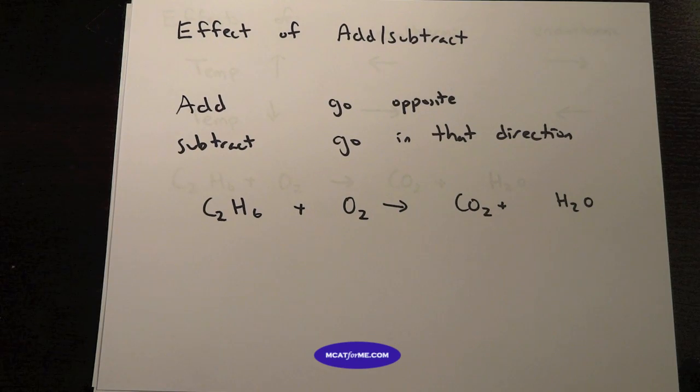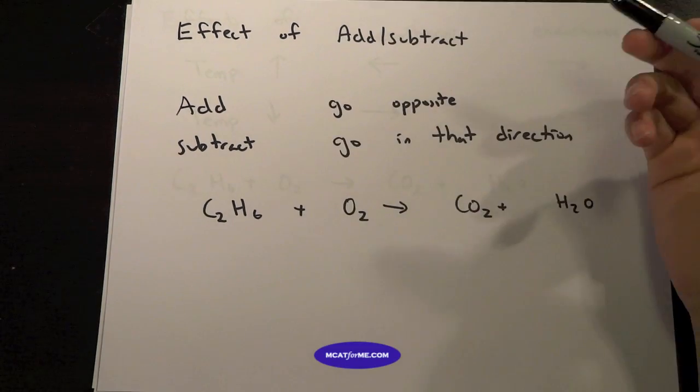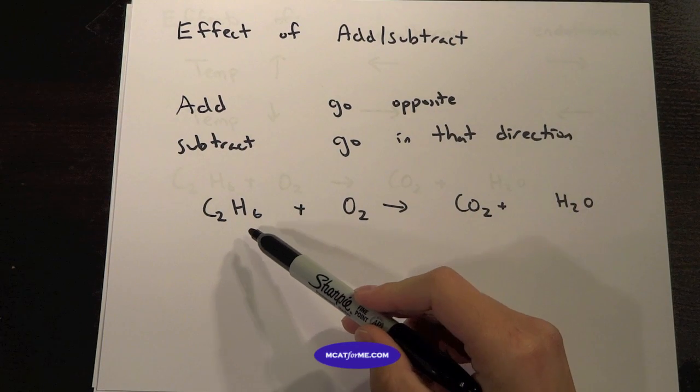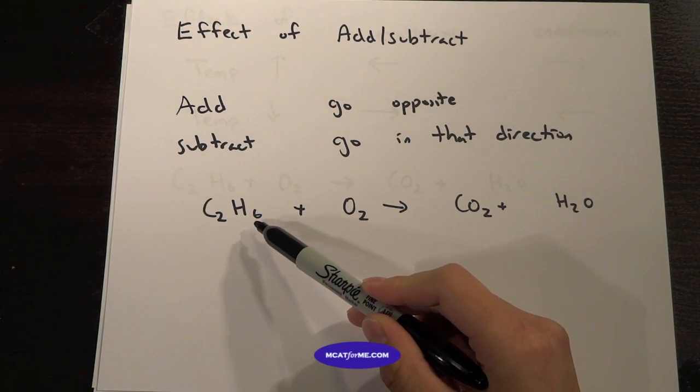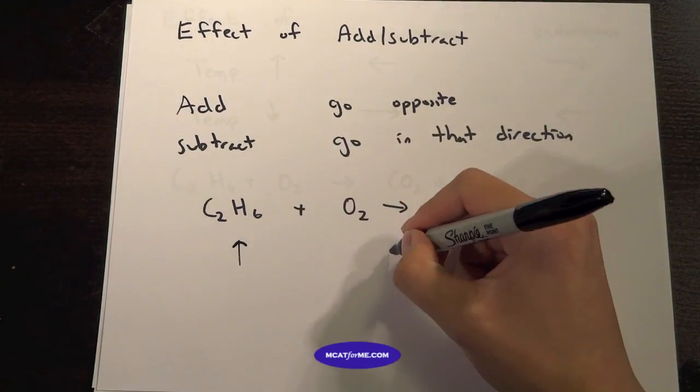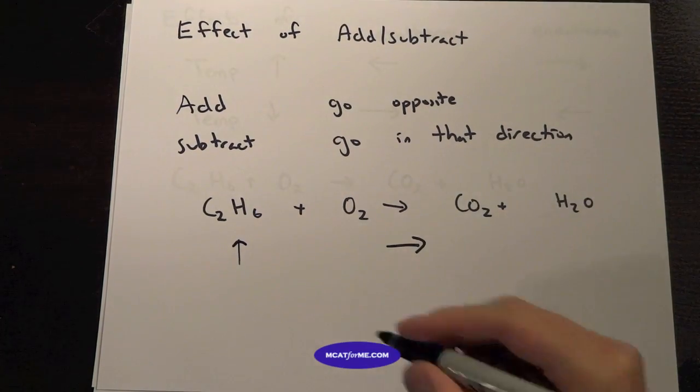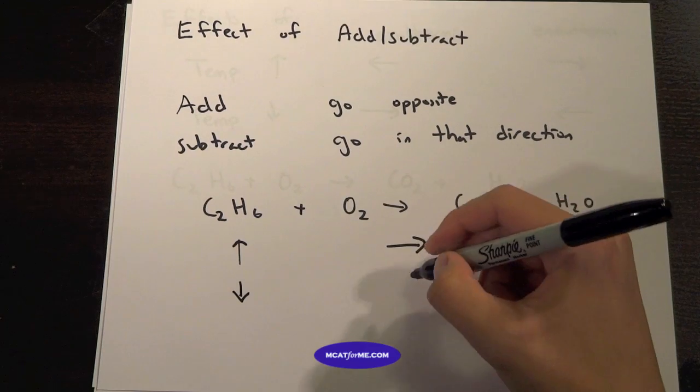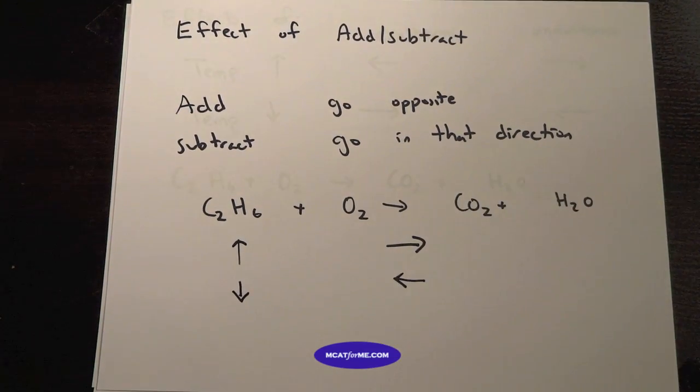So when we add or subtract something, for example if we add C2H6 it will want to go to the right. If we subtract C2H6 it will want to go that way because it will always want to reverse whatever change we made.